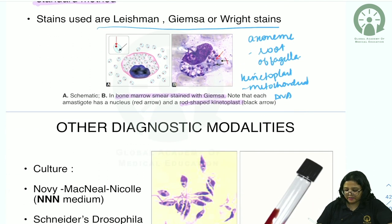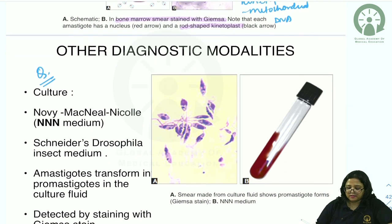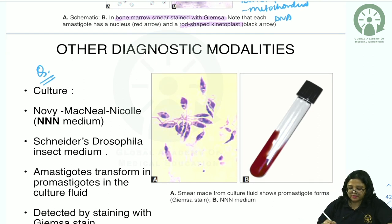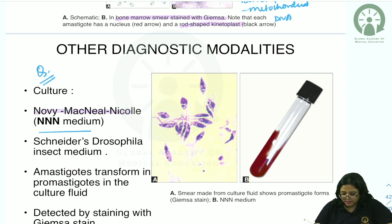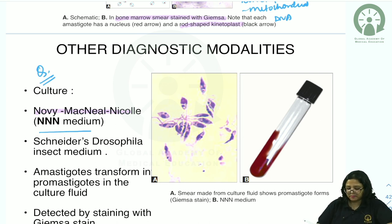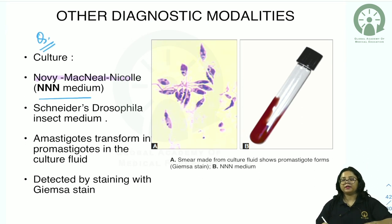Culture for Leishmania is performed in NNN medium (Novy-MacNeal-Nicolle medium), named after its discoverers, or Schneider's Drosophila insect medium. In culture fluid, amastigotes transform into promastigotes, which can then be detected by Giemsa staining.